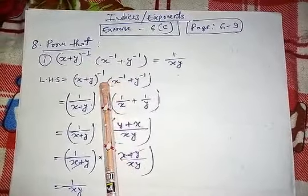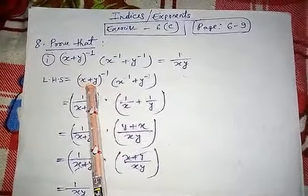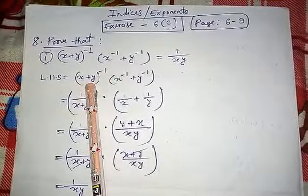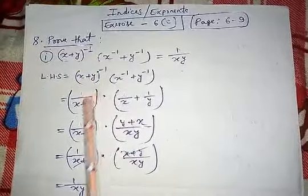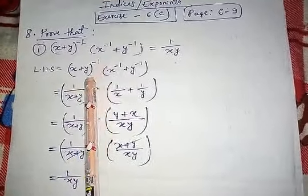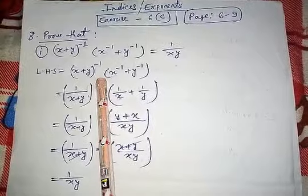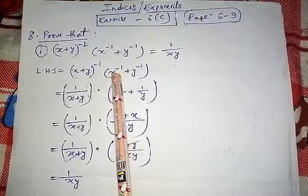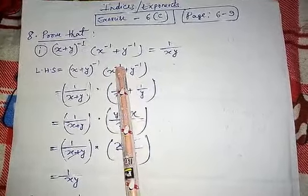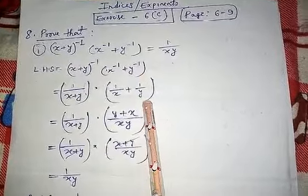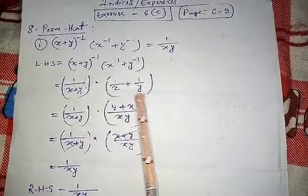Whenever we have a negative power, to make it positive we change numerator and denominator. Here the numerator is the expression and below it the denominator is 1 — nothing written means 1. So 1 goes up and (x + y) comes down, making the negative power positive. Similarly, x to the negative power becomes 1/x, and y to the negative power becomes 1/y.